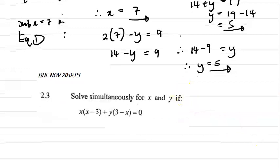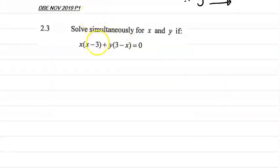This question appeared in the November 2019 paper one. It says solve simultaneously for x and y if x(x - 3) + y(3 - x) = 0. In order for us to solve this particular question, we have to factorize this before we can solve this equation. But I got x - 3 and then I got 3 - x.